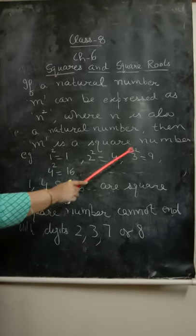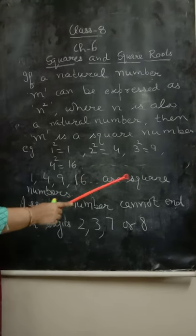So here 1, 4, 9, 16 and so on are square numbers.